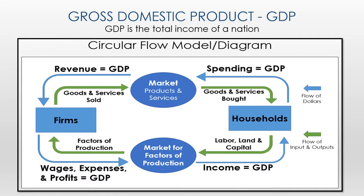Another way to look at this is the circular flow diagram. Michael, who is a household, is going to spend some of his money. He goes to the market and gets goods and services, and that equals revenue. In this simplified economy, if he spends all of his money, it all goes into the firm. The firm pays out wages, expenses, and has some profits, which become income for Michael — which is GDP. So the same flow of money goes around and around.